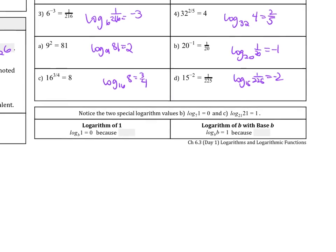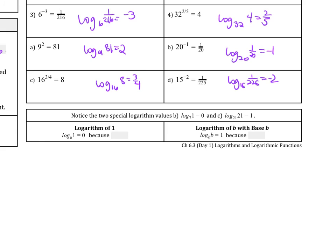So I want you to notice the two special logarithm values. Log base 7 of 1 equals 0. And log base 21 of 21 equals 1. So this is true. Logarithm of 1. So log base b of 1 equals 0 because b to the 0 equals 1. Then log base b of b equals 1 because b to the 1st power equals b. These are really important properties that we are going to use later on in this chapter. So just notice these things on here.